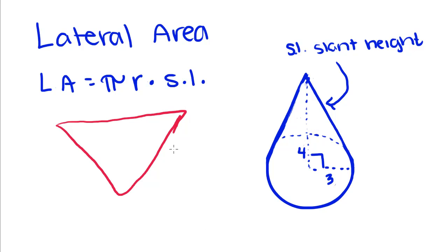So to do this, it's pi times r, which is 3, times our slant height, which is this height right here.